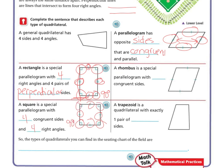Now, a rhombus is a special parallelogram with four congruent sides. So you can see right there, see how they have the one dash, their four congruent sides.